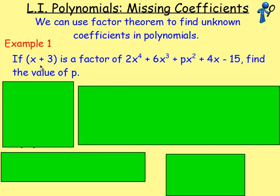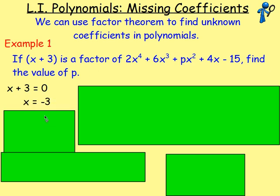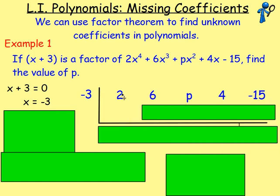To do this, we are told that x plus 3 is a factor, which means that if we divide this polynomial by x plus 3, we will end up with a remainder of 0. So let's do that. If you divide it by x plus 3, remember the first thing you do is you set x plus 3 equal to 0, subtract 3 from both sides and x equals negative 3. So when you set up your L-shape, you know over here to the left of this vertical line you will have negative 3.